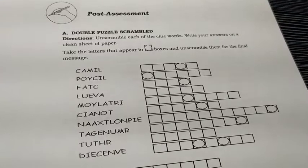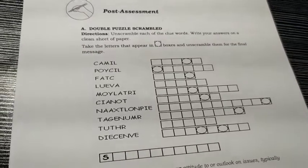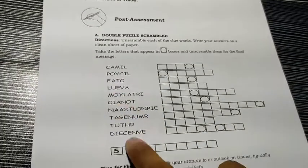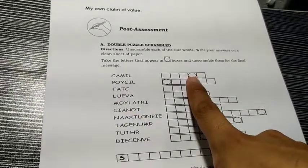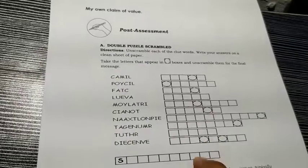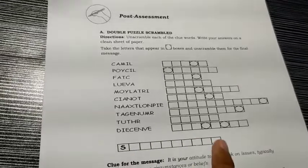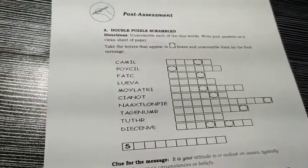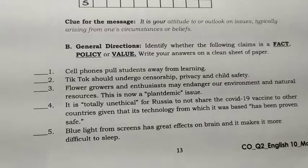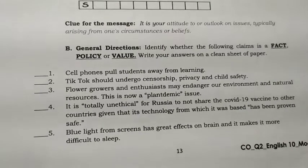In the post-assessment, part A is a double puzzle with scrambled letters. After getting the mystery words, consider all letters placed in boxes with an oval inside, then rearrange and unscramble them to find the final message or word — it should start with the letter S. Part B of the post-assessment: identify if each statement is a fact, policy, or value.